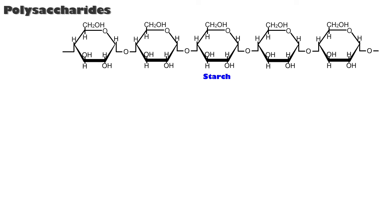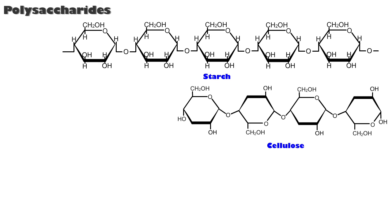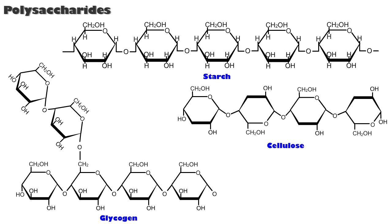Polysaccharides include starch, cellulose, and glycogen. These long, chain-like polymers make ideal storage products due to their insolubility.